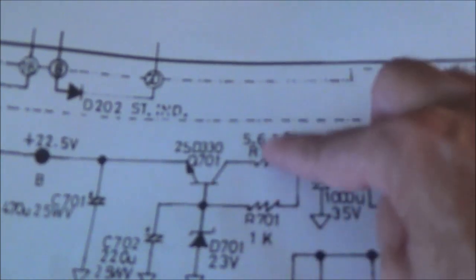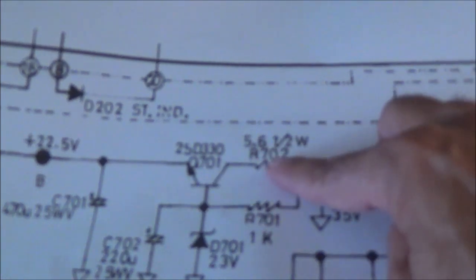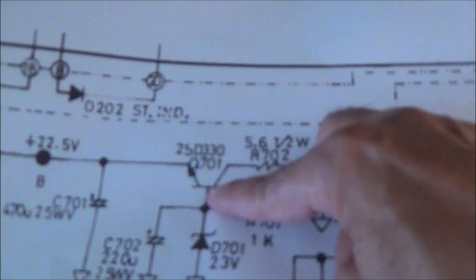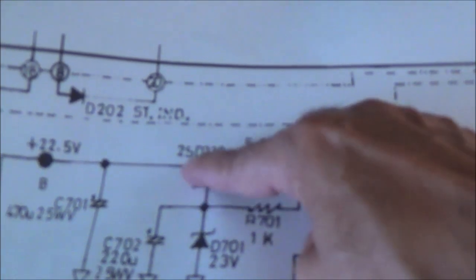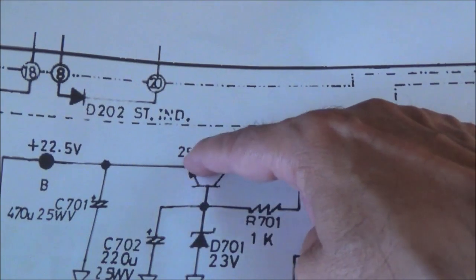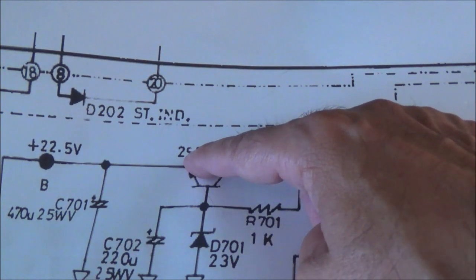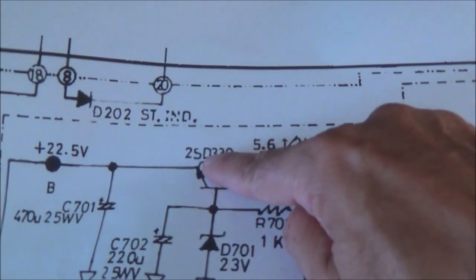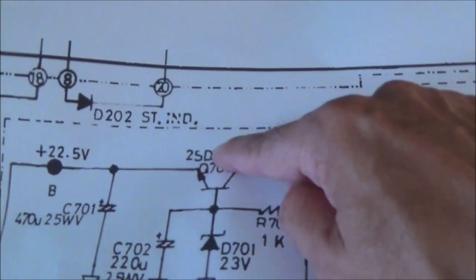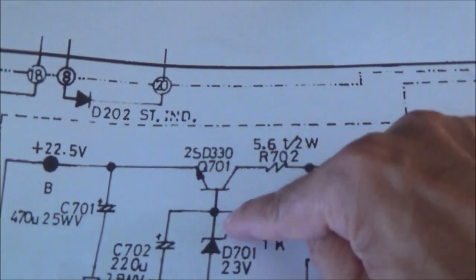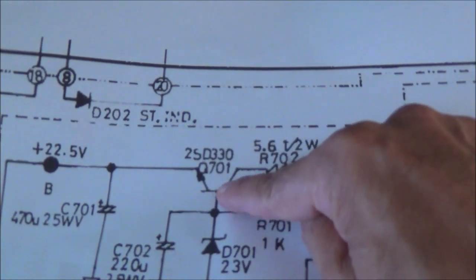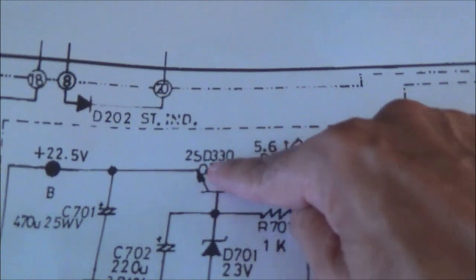So NPN of course, this voltage here where I'm pointing at, collector being highest, and then base middle highest, and then of course emitter lowest. Your emitter voltage is your output voltage. That's going to be this voltage, your Zener voltage here, minus the base to emitter voltage. And how this thing works basically...